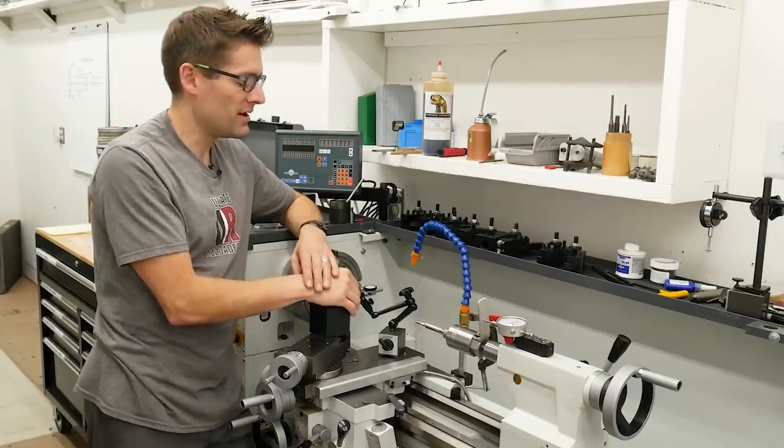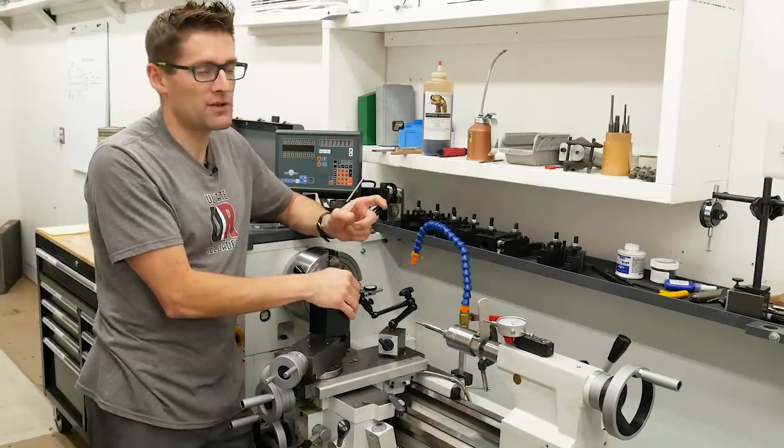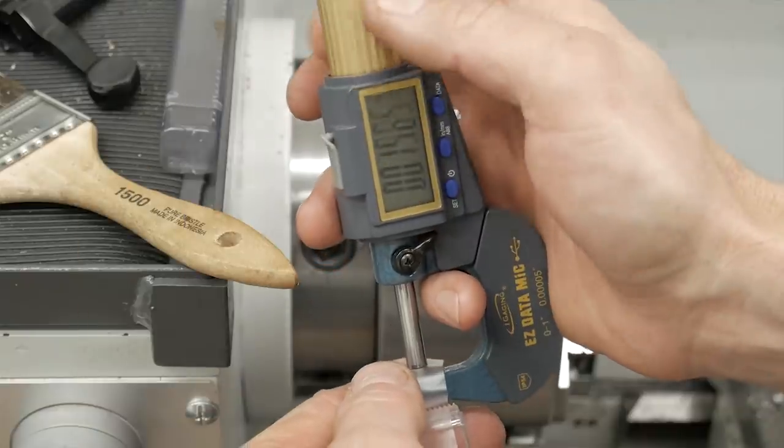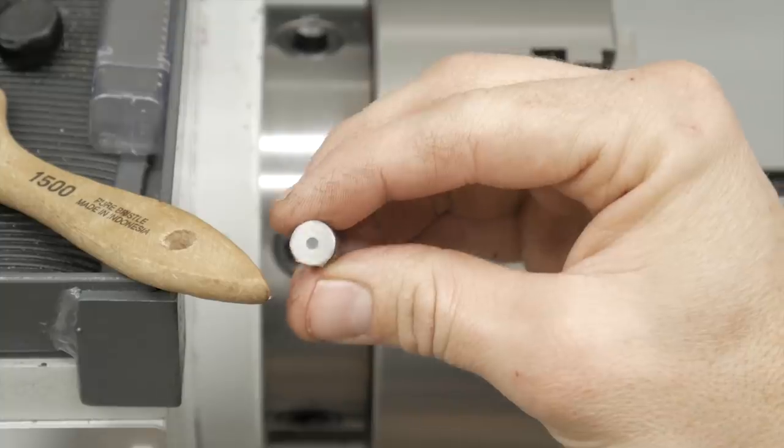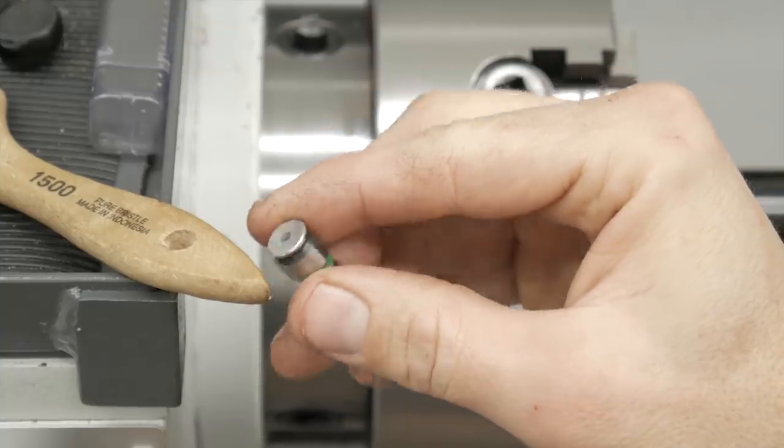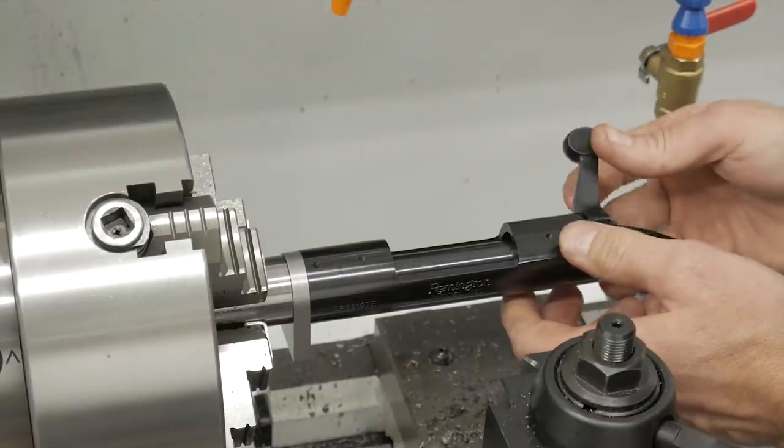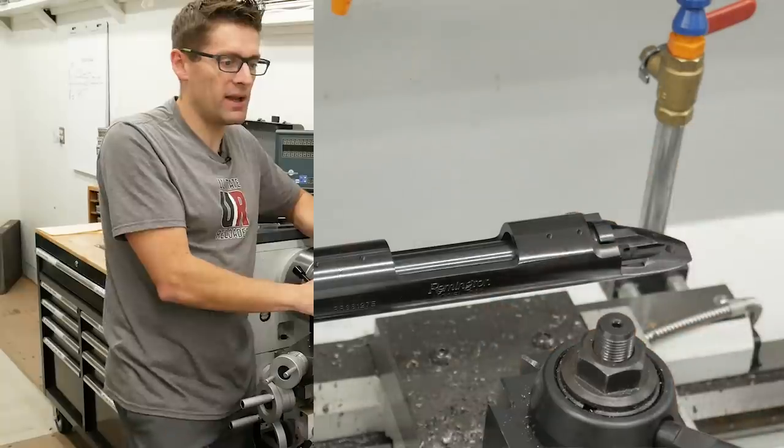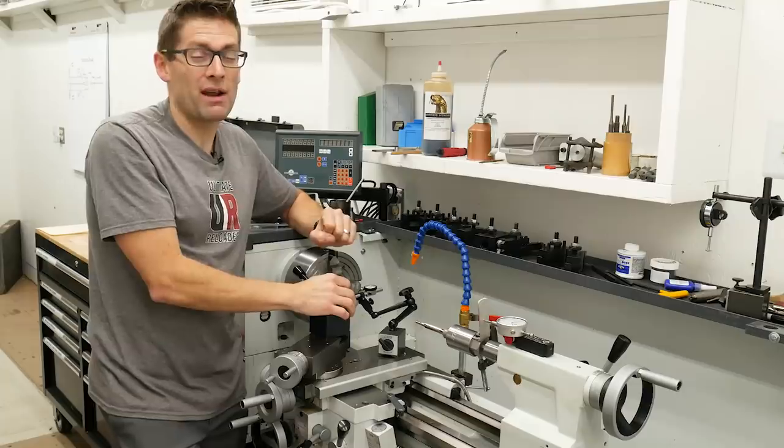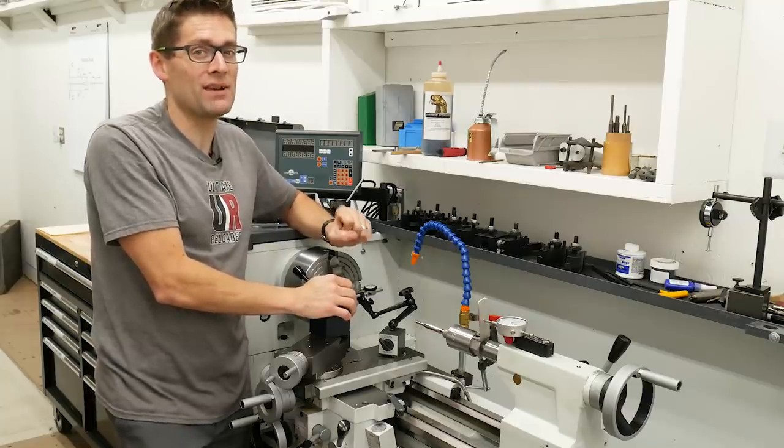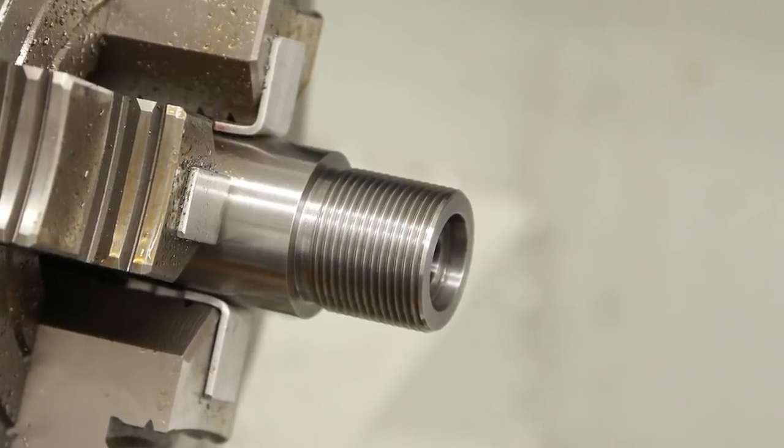And so what I decided to do was I used the Gordy Gritters technique with the go gauge by putting a piece of scotch tape on the back. That's about two thousandths of an inch and that converts a go gauge into a no-go gauge. I cut the chamber so that the bolt handle, with the bolt handle closed and the no-go gauge in place, it was just perfect. So I cut the chamber two thousandths of an inch too deep by using a no-go gauge to check my chamber cut depth.